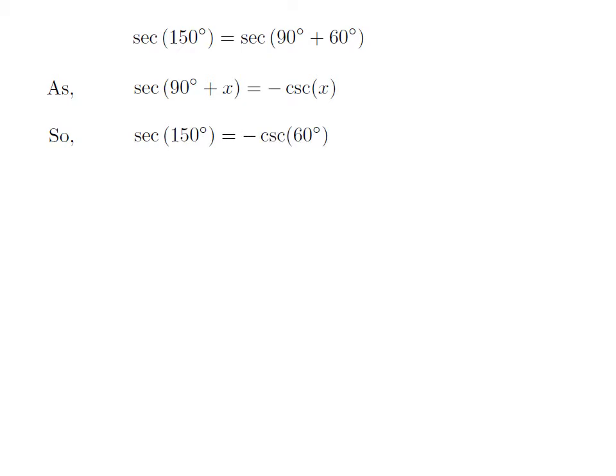Let us apply the above identity for secant of 150 degrees. Here x is 60 degrees, so secant of 150 degrees is equal to minus cosecant of 60 degrees.